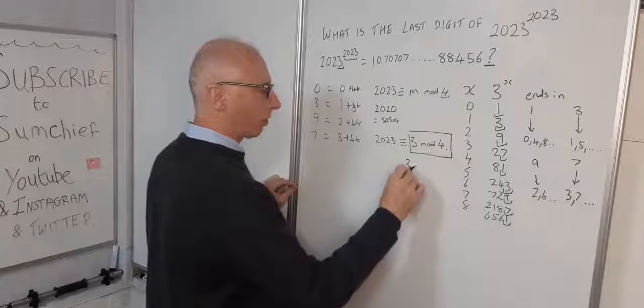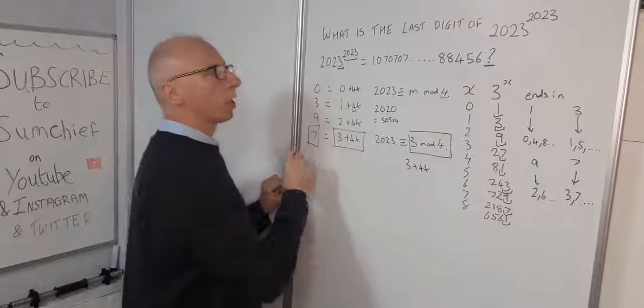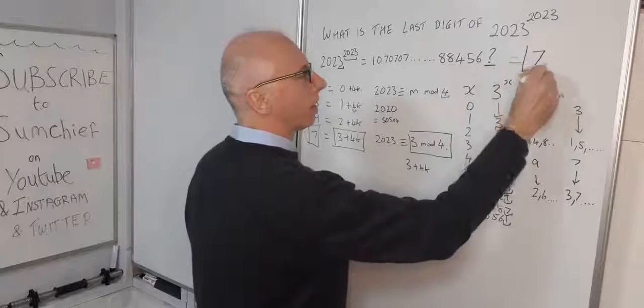3 mod 4 equals 3 + 4k, so it's this one. Our final digit will be 7.